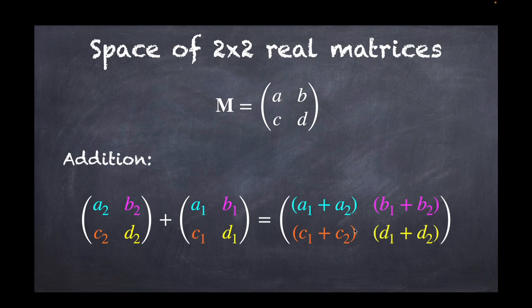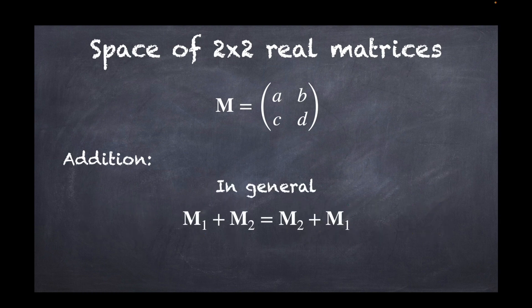Because the ordinary addition of real numbers is commutative, and because we add component by component, this preserves commutativity. Therefore, in general, M1 + M2 = M2 + M1.